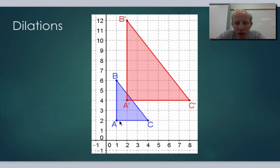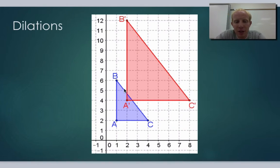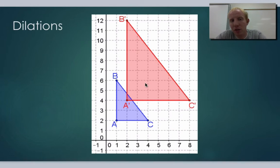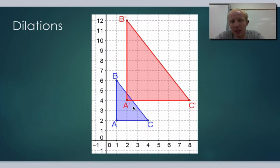So if we take triangle ABC and make a new triangle, which we call A prime, B prime, C prime — that little apostrophe just means new, prime means new — this triangle right here could be dilated to this triangle right here. Basically made bigger or smaller to make a new triangle. A dilation is when we take one shape, make it bigger or smaller to make a new shape, but it still has those same properties.